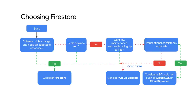To summarize, let's explore this decision tree to help you determine whether Cloud Firestore is the right storage service for your data. If your schema might change and you need an adaptable database, you need to scale to zero, or you want low maintenance overhead scaling up to terabytes, consider using Cloud Firestore. Also, if you don't require transactional consistency, you might want to consider Cloud Bigtable, depending on the cost or size. I will cover Cloud Bigtable next.